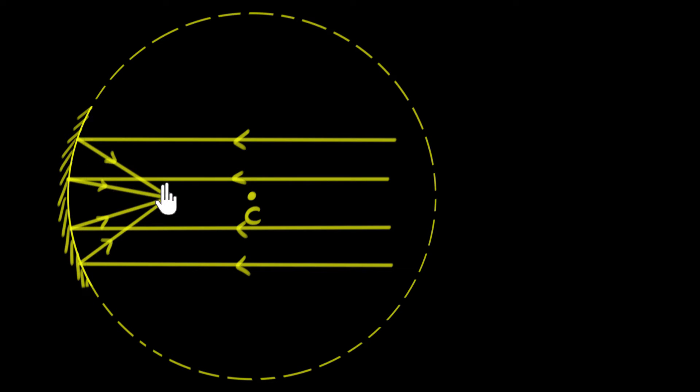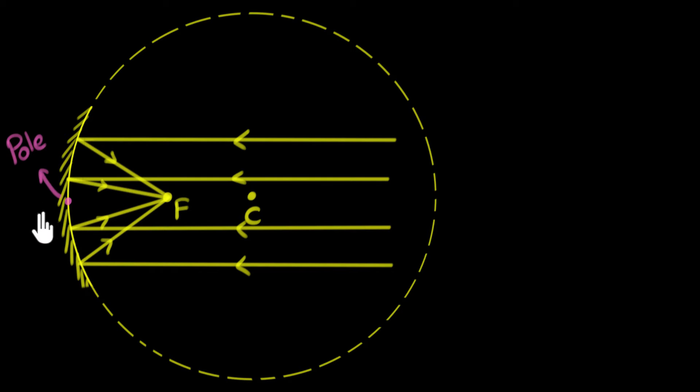Let's start with some technical names. This point where all parallel rays of light eventually meet up is called the focus, because the rays of light are getting focused, and it's represented by capital F. The central part of the mirror — the center — is often called the pole, and it's represented by P.